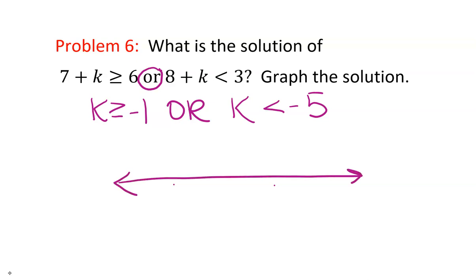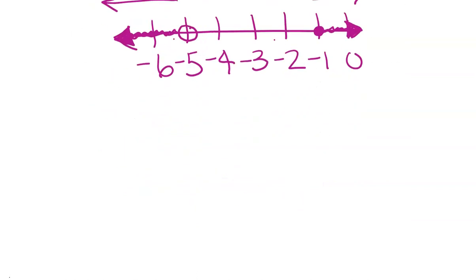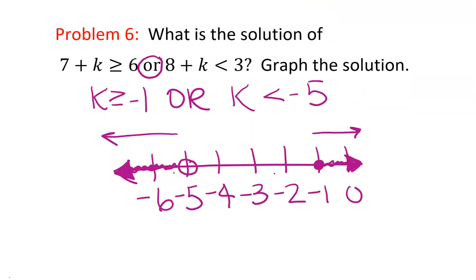We need both numbers on the graph. Starting at negative 6 through 0: negative 6, negative 5, negative 4, negative 3, negative 2, negative 1, and 0. Fill in the circle at negative 1 and shade to the right. For the other part, use an open circle since it's strictly less than negative 5, and shade to the left. Notice these don't overlap at all — so we include both. Shade from negative 5 to the left, filling in the arrow, and also shade to the right from negative 1, filling in that arrow too.